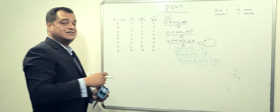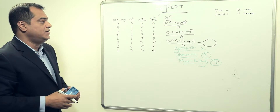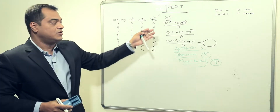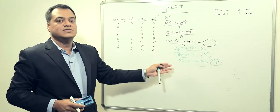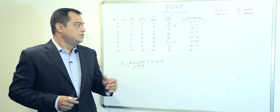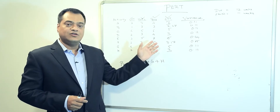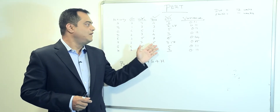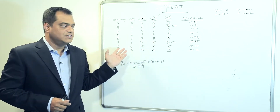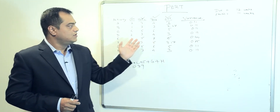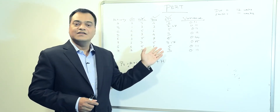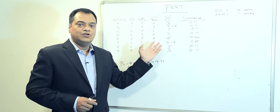We have now entered all the estimated values for this particular project. Considering we are estimating the values, we also want to see what is the variance from the mean — the difference of each estimated value from the average number.